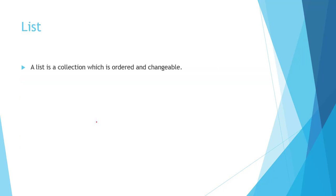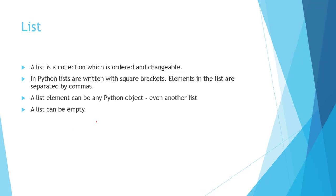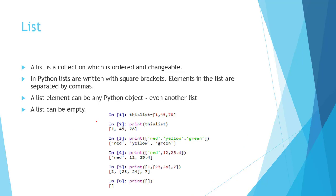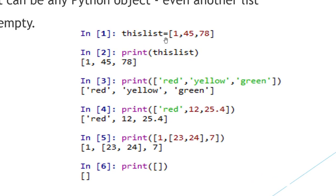List is a collection which is ordered and changeable. In Python, lists are written in square brackets and elements in the list are separated by commas. Elements can be any Python object, even another list, and a list can also be empty. Here, we have a list named 'this_list' — all the elements are separated with commas and enclosed between square brackets. Another list is printed — a string list with red, yellow, and green.